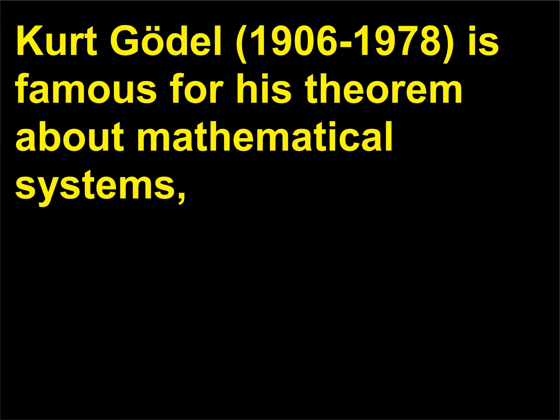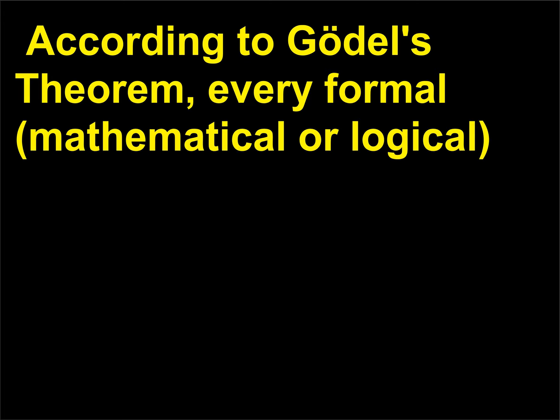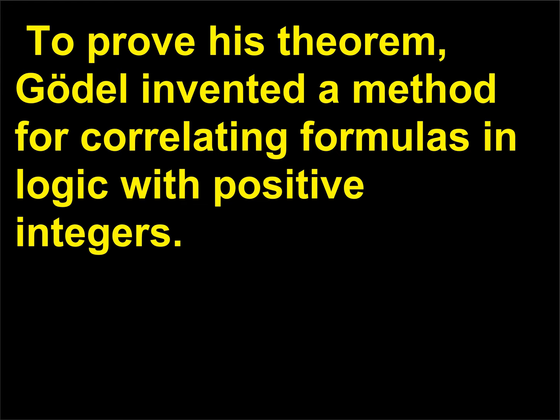Who was Kurt Gödel? Kurt Gödel, 1906–1978, is famous for his theorem about mathematical systems, which appeared in a 1931 article titled 'On Formally Undecidable Propositions in Principia Mathematica and Related Systems,' originally published in German in the 1931 volume of the journal Monatshefte für Mathematik. According to Gödel's theorem, every formal mathematical or logical system is incomplete because there can always be a sentence expressing a truth that can't be proved in the system. To prove his theorem, Gödel invented a method for correlating formulas in logic with positive integers.